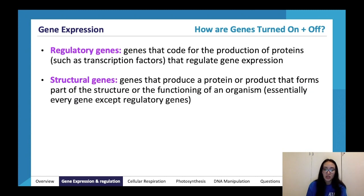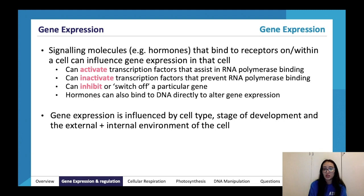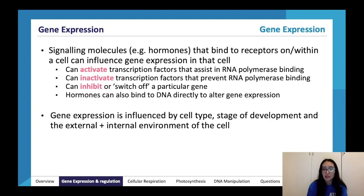Regulatory genes encourage the production of proteins such as transcription factors that regulate gene expression. Structural genes are genes that produce a protein or product forming part of the structure or functioning of an organism — essentially every gene except regulatory genes. Signaling molecules such as hormones can bind to receptors on or within a cell and influence gene expression. Many signaling molecules are proteins and can activate transcription factors, inactivate transcription factors that prevent RNA polymerase binding, or bind DNA directly to alter gene expression.